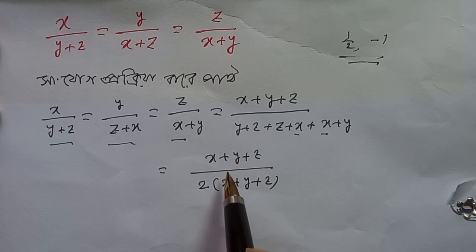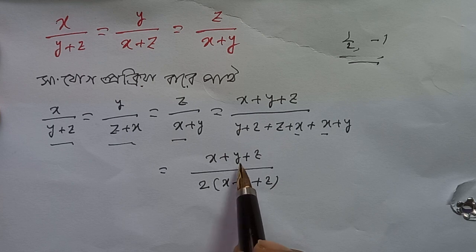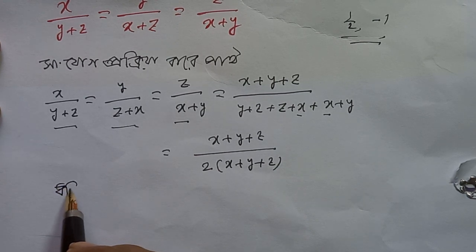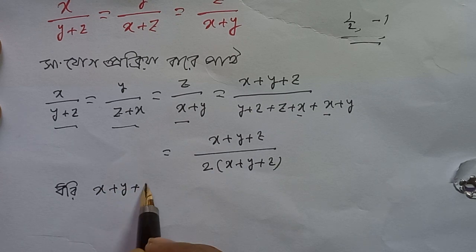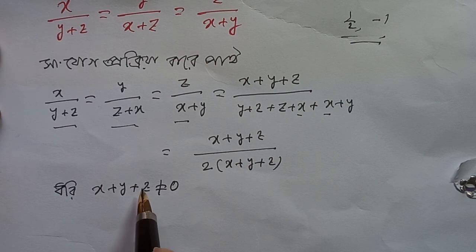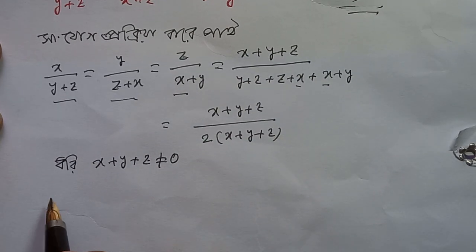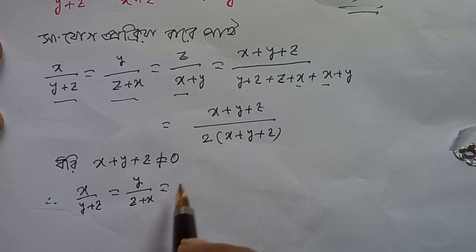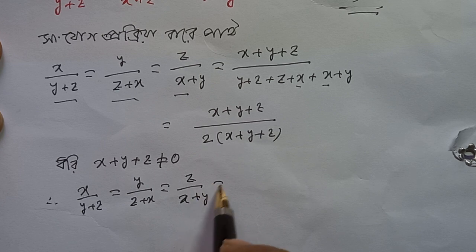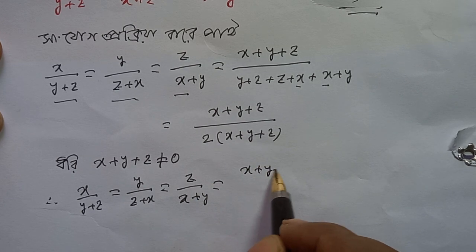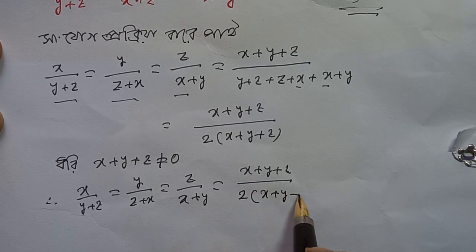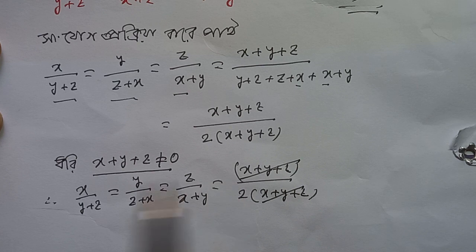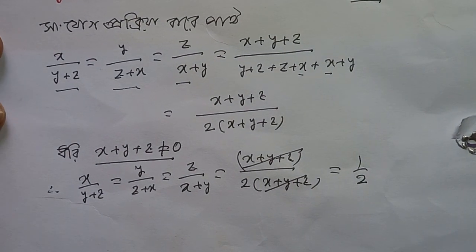Now we have 2 cases. Case 1: x plus y plus z is not equal to 0. So we have x by y plus z equals to y by z plus x equals to z by x plus y equals to x plus y plus z by 2 into x plus y plus z. We can cancel x plus y plus z, and this equals to half.